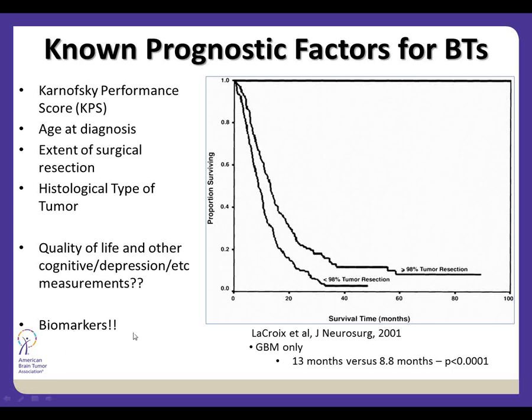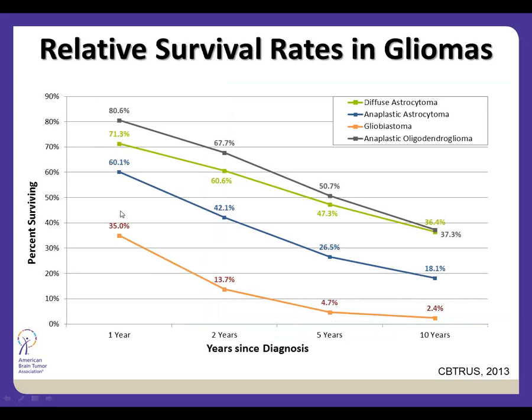There's also something called biomarkers — derived from tumors that are removed — where we look at different genetic changes in the tumors and try to see if those are associated with clinical outcomes. Some data from CBTRUS shows survival trends over time for brain tumors.